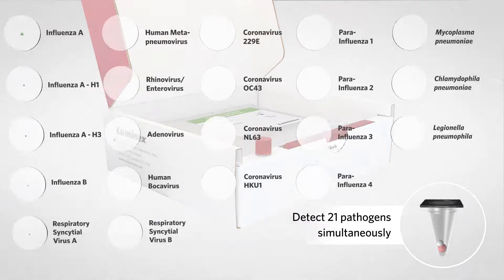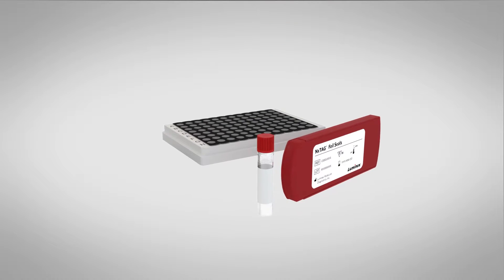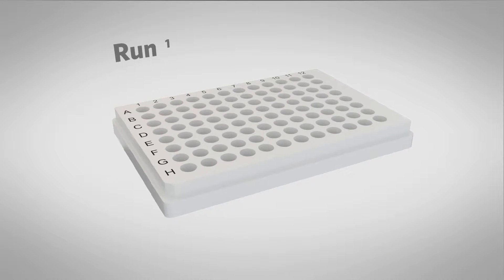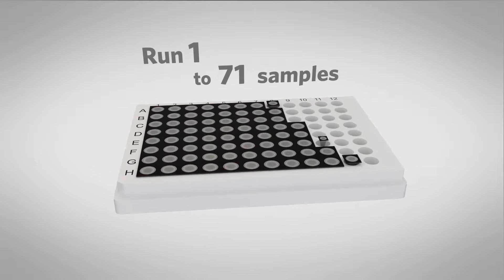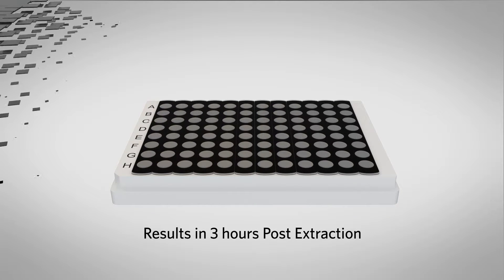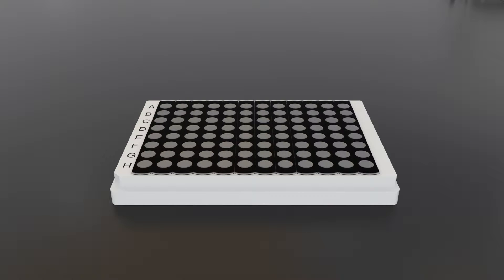The Nextag Respiratory Pathogen Panel includes coverage of 21 actionable targets, including both viral and bacterial pathogens, which are tested in lyophilized pre-plated wells that can be separated to run 1 to 96 samples in a single batch. Results are delivered in less than 3 hours post-extraction by following the 3 easy steps of the Nextag Chemistry workflow.